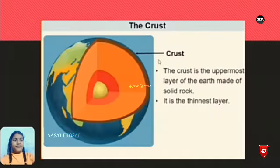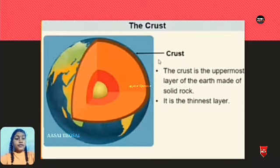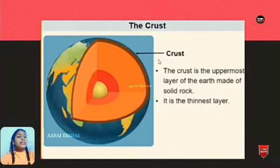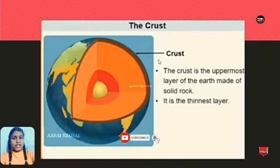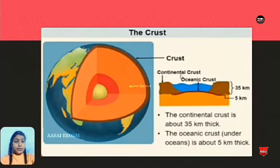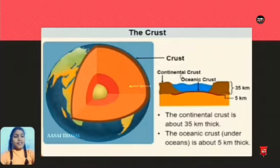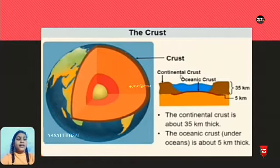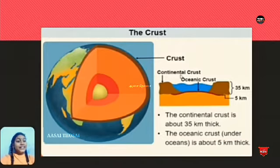What are the layers? First one is crust. In that crust we all live. It is the thinnest layer made of solid rock. The crust is the uppermost layer of the earth. This is the lithosphere in which we are living. Crust is divided into two types: continental crust and oceanic crust. The continental crust is about 35 kilometers thick. The oceanic crust is about 5 kilometers thick.